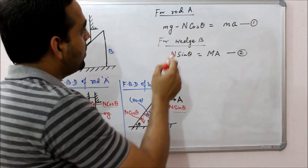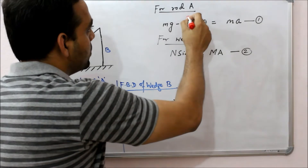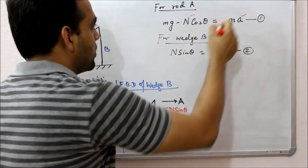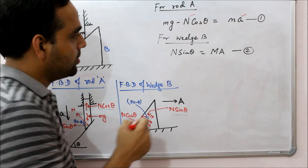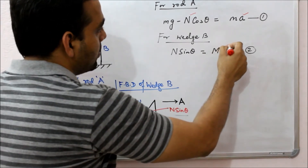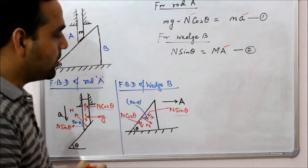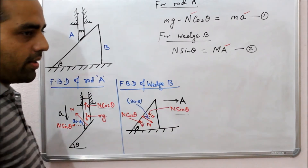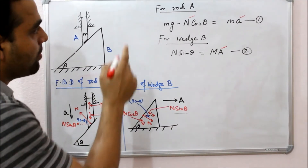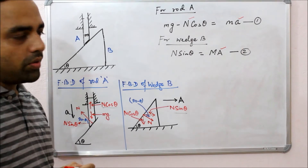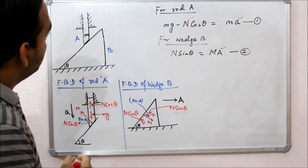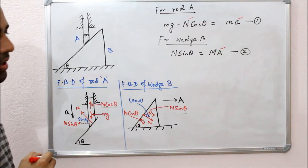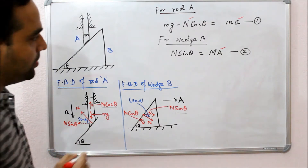We can see that we have three unknowns: the normal force N, small 'a' the acceleration of the rod along the vertical direction, and big 'A' the acceleration of the wedge along the horizontal direction. So we have three unknowns but only two equations. We can get the third equation from the constraint relation. So let us write down the wedge constraint relation.